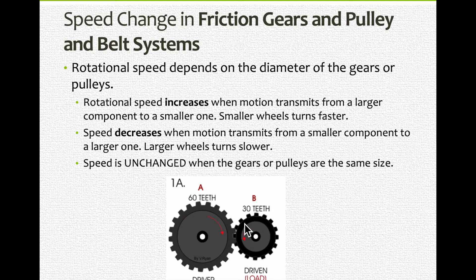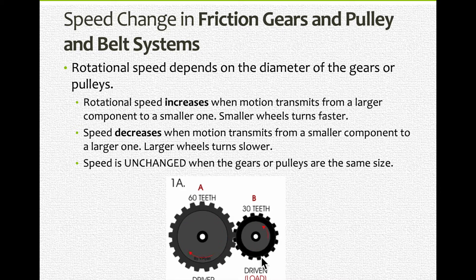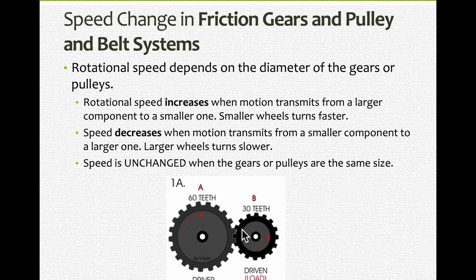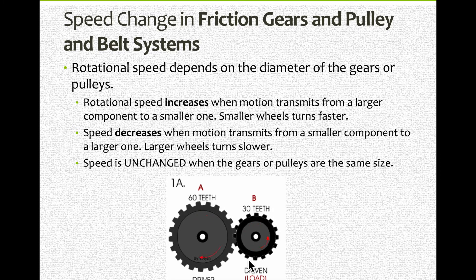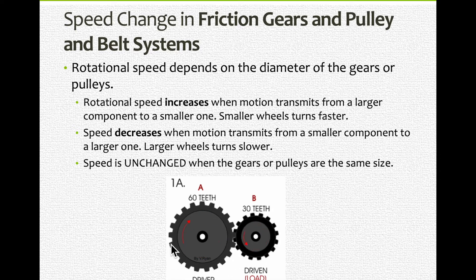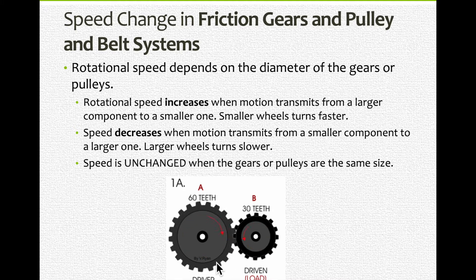As opposed to a smaller gear, where it takes much less time to go around a full circle. So a smaller gear with fewer teeth will turn faster, and a larger gear with more teeth will turn more slowly.